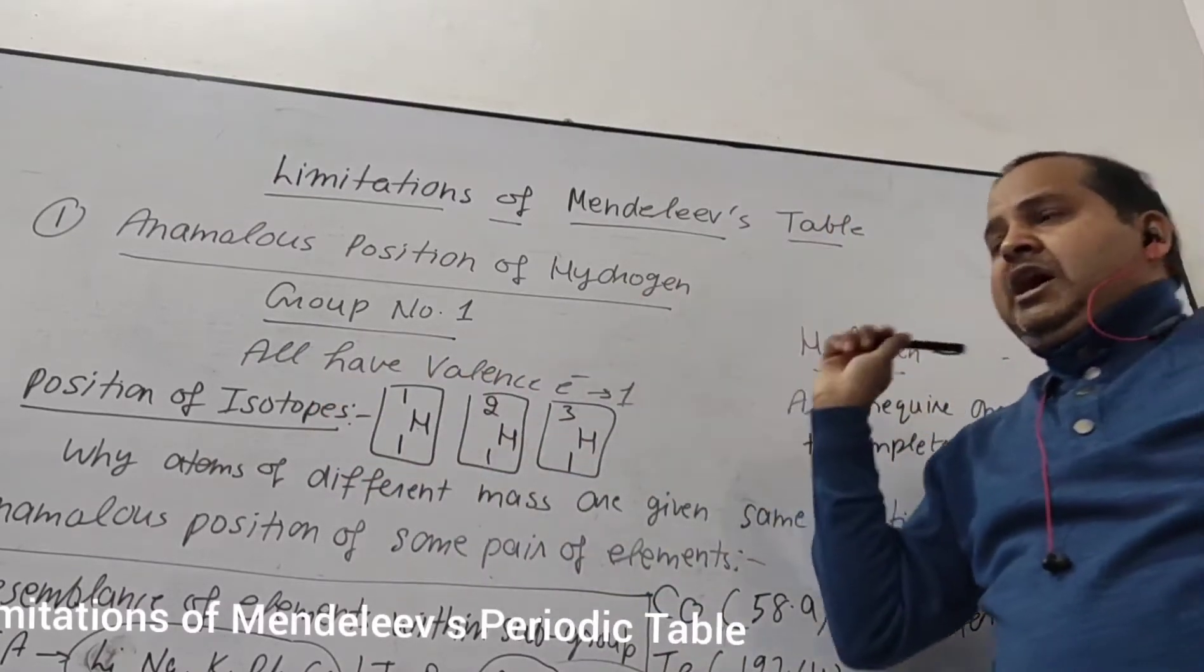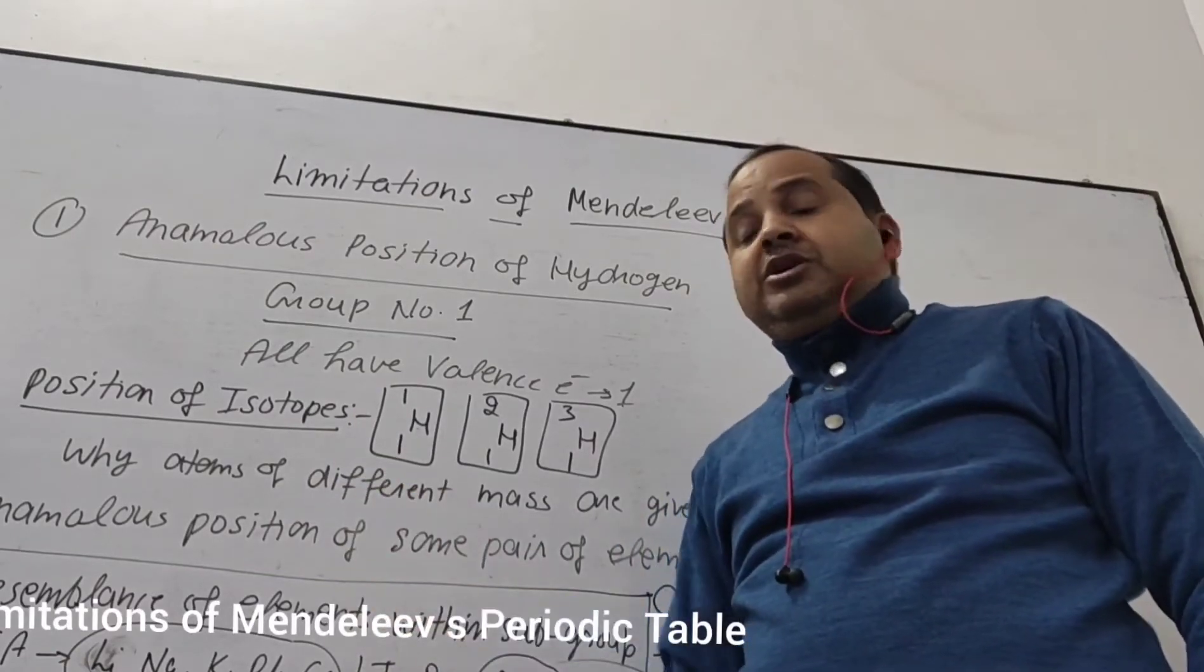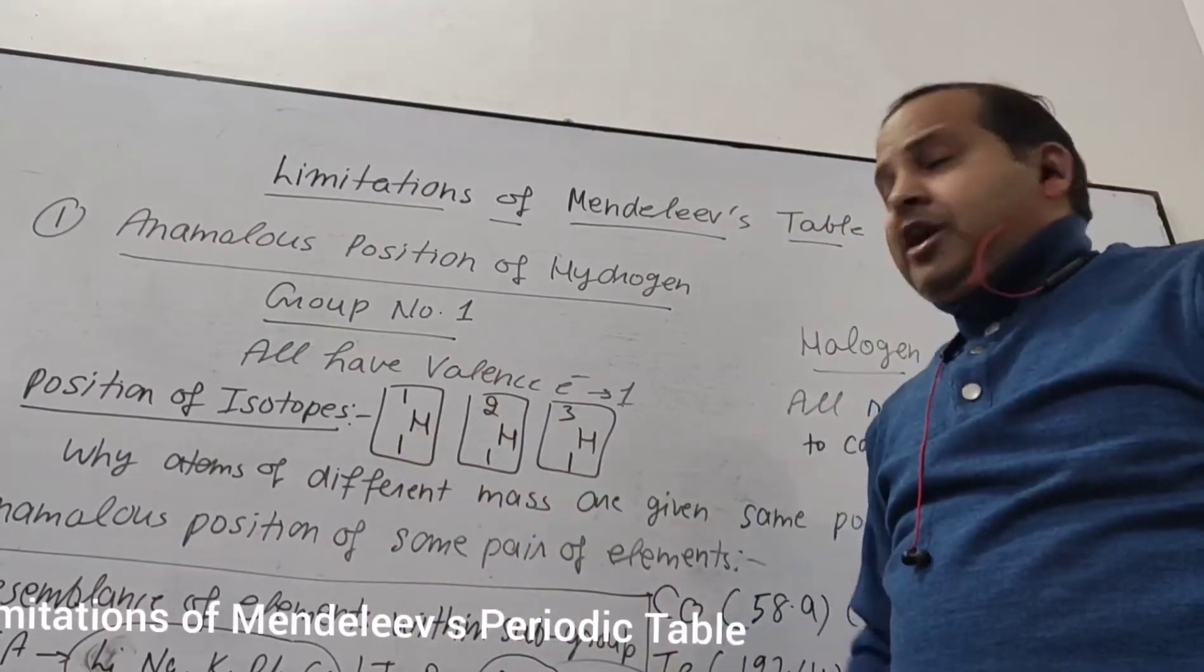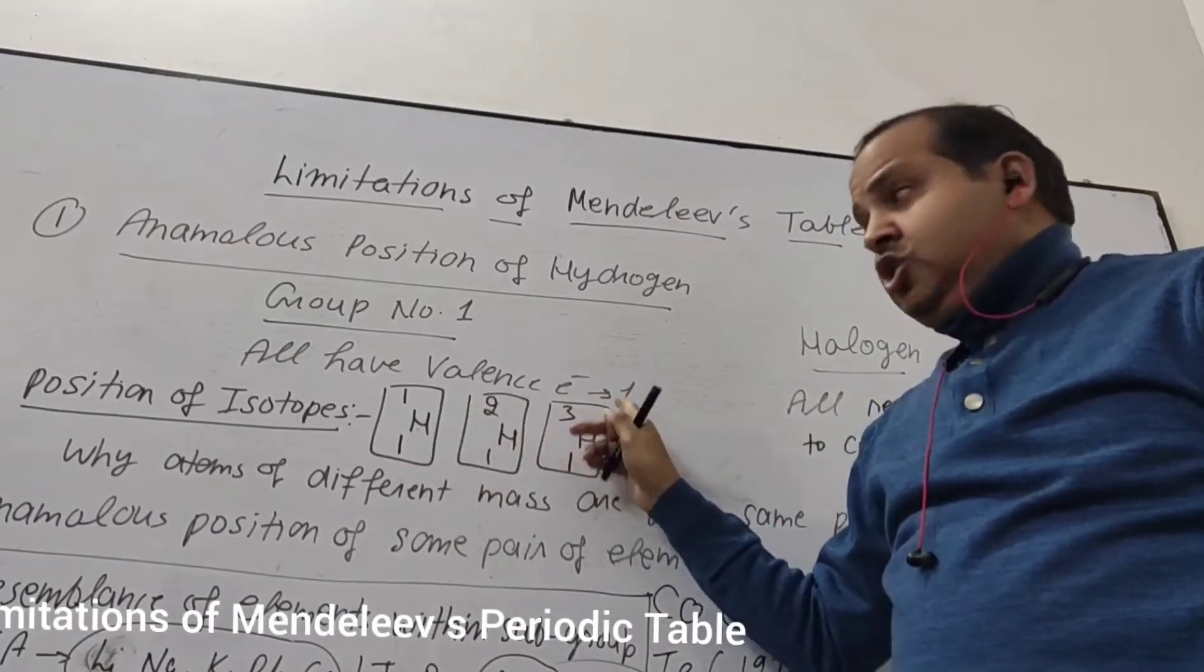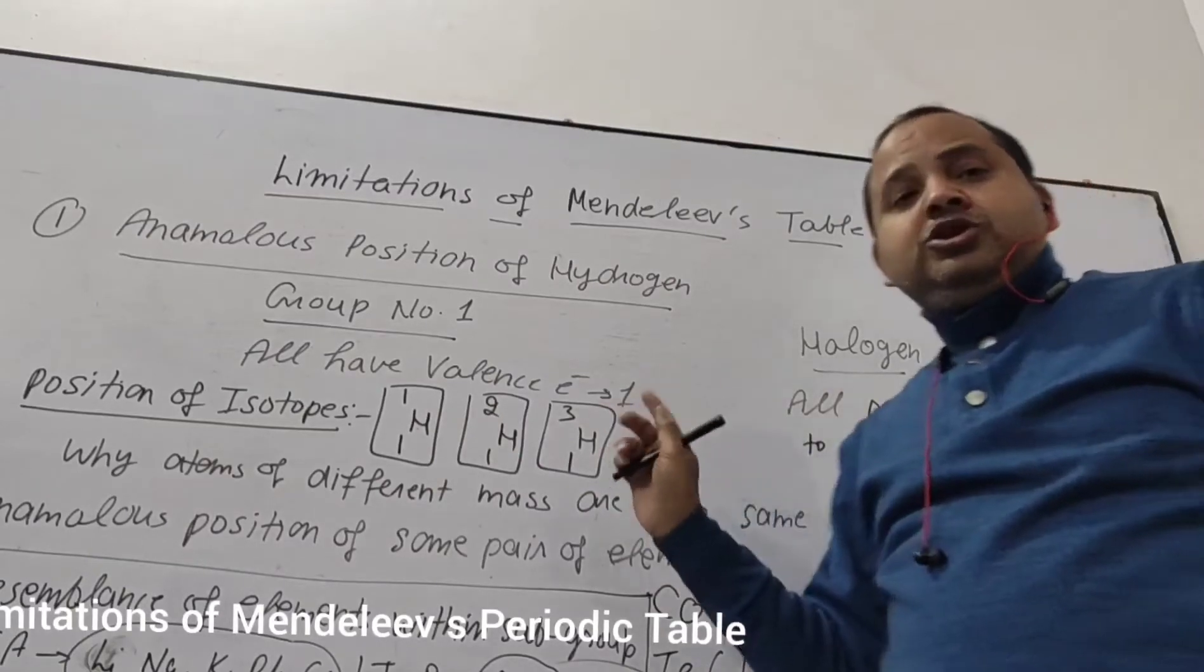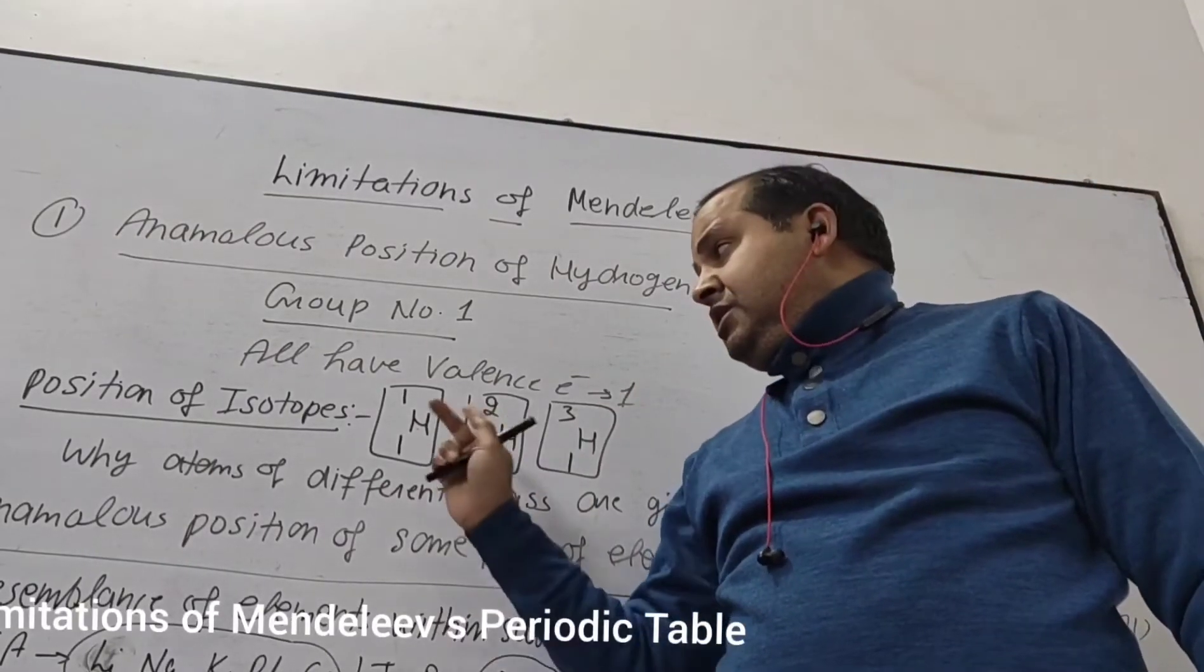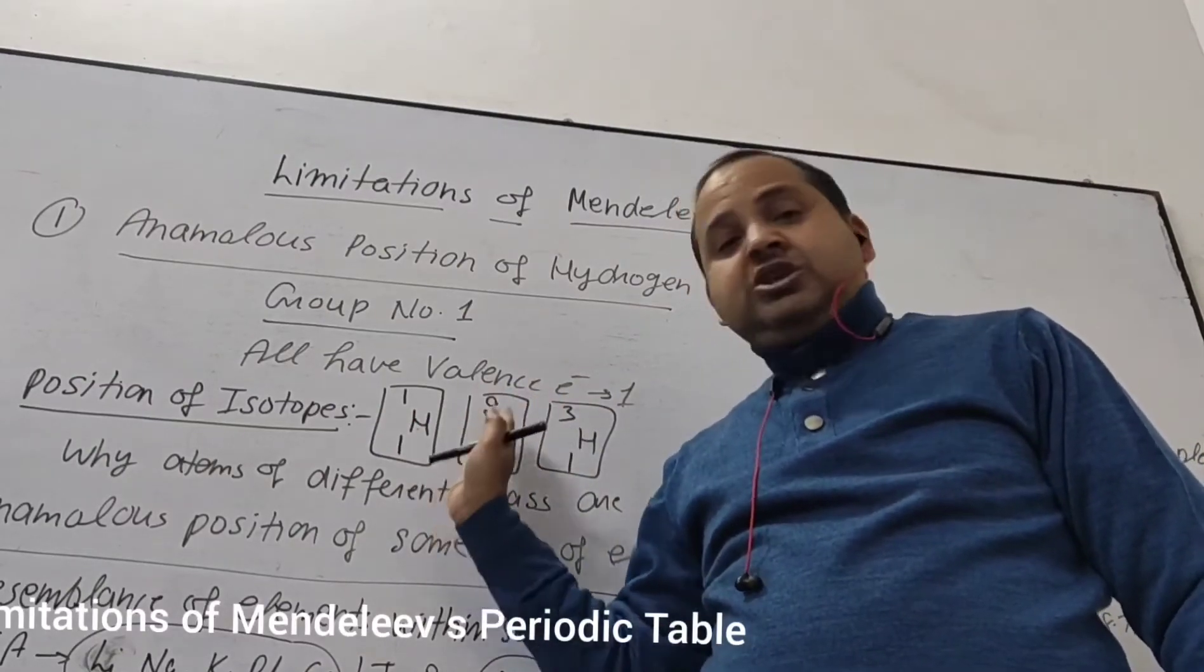This is the anomalous position of hydrogen. Other position of isotope - second limitation of the Mendeleev Periodic Table is position of isotope. You can see the different atoms of hydrogen which has a different mass. So why they are given the same position in the Periodic Table? According to the Mendeleev Periodic Table they should be given a different position which is not given to them. So this was also a limitation.